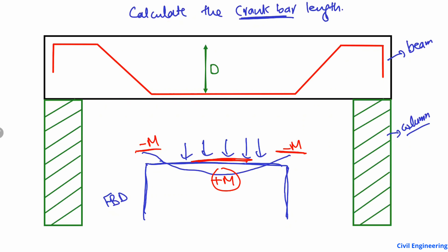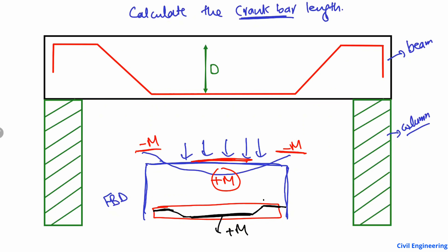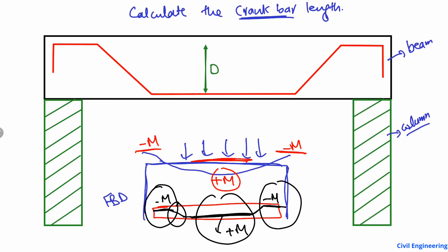What we do with the crank bar is this: considering this beam section, we provide the reinforcement for the positive bending moment at the bottom, and then we bend it upward on both sides toward the supports. This forms the reinforcement for the negative bending moment at the top. We only bend the bar in those regions, and this bar is known as a crank bar because it has been bent here and also here.